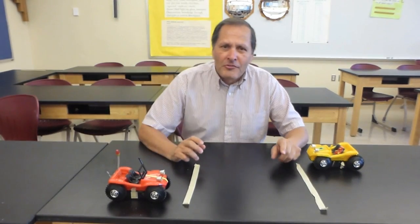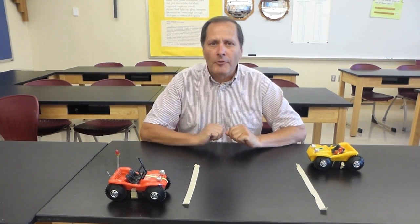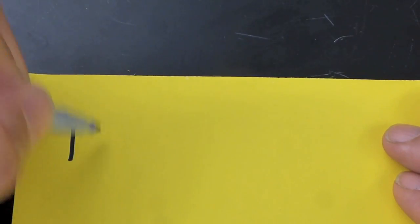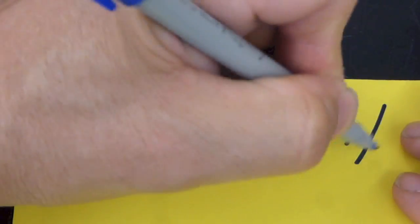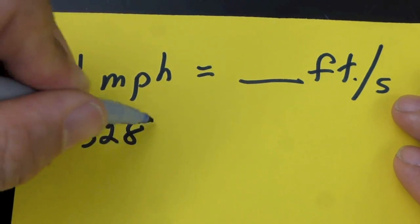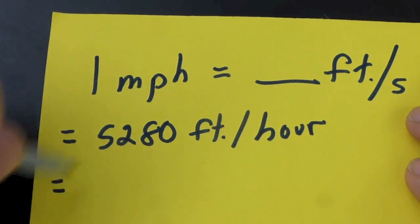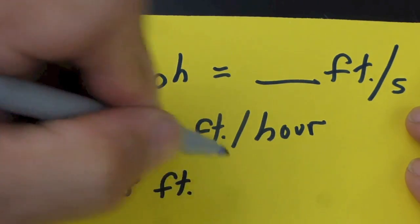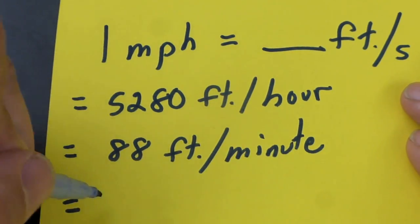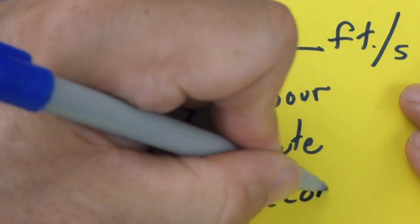Now the first decision to make about this experiment is to decide how far to put those reference lines on the road. To figure that out, we need to do a little bit of math. Our calculations start by changing miles an hour into feet per second. We know that one mile an hour is equal to 5,280 feet per hour. If I take that number and divide it by 60, that gives me 88 feet per minute. If I divide it by 60 again, that gives me 1.46 repeating feet per second.